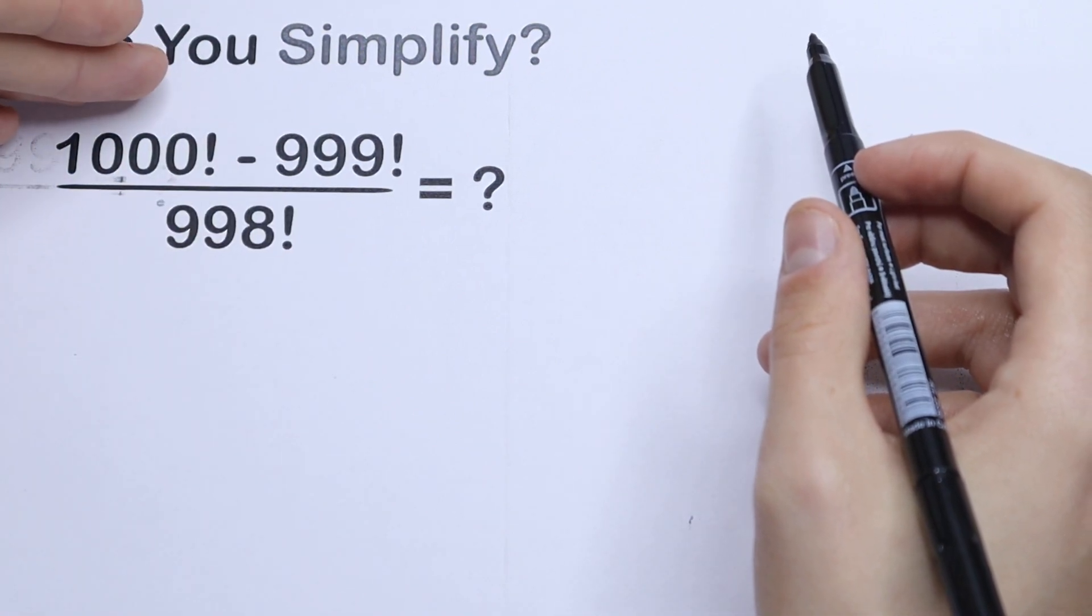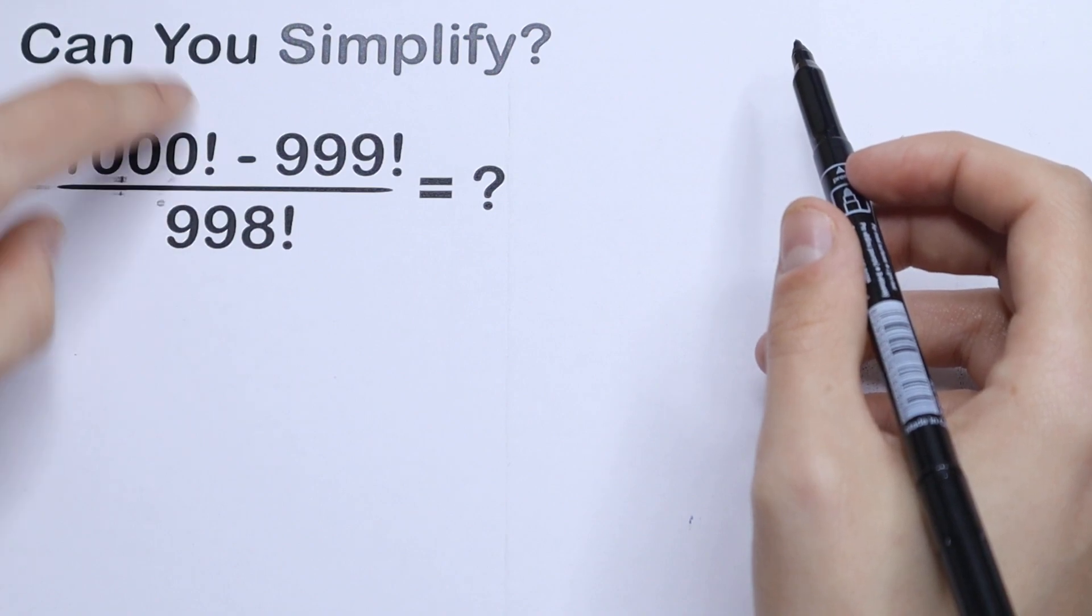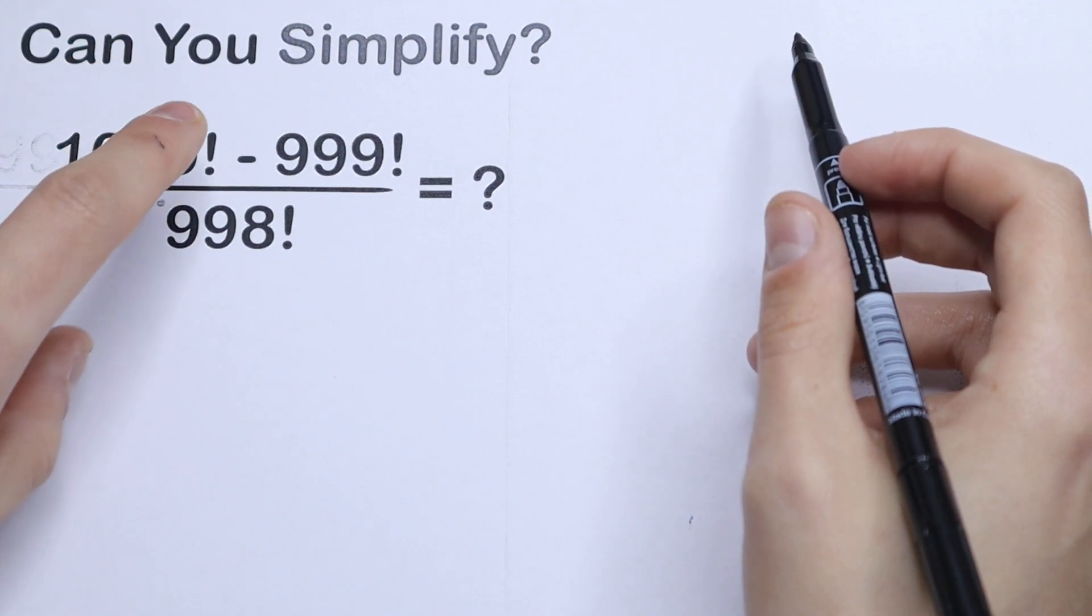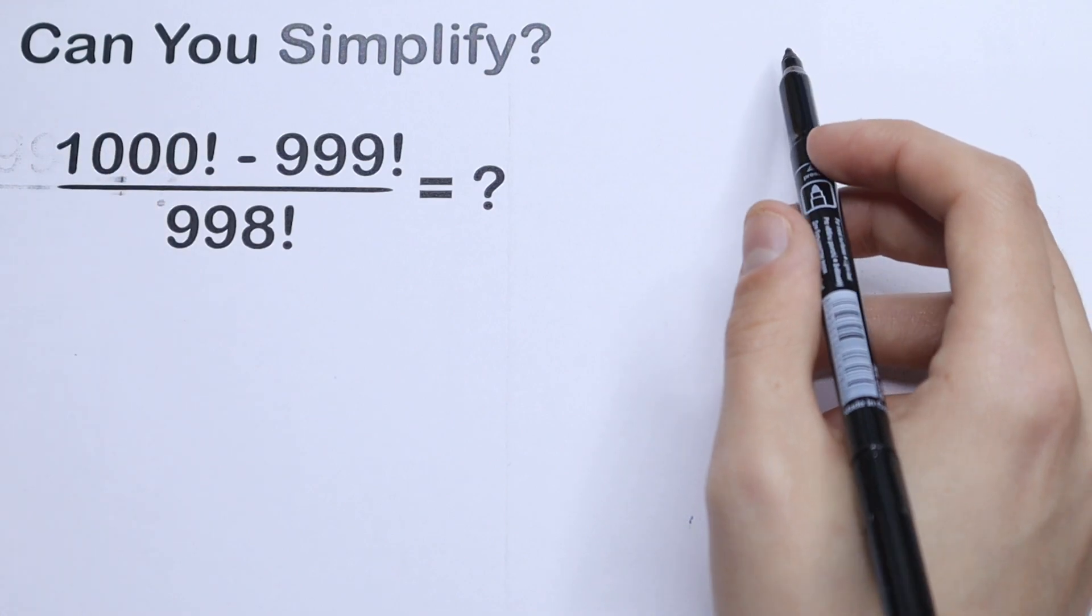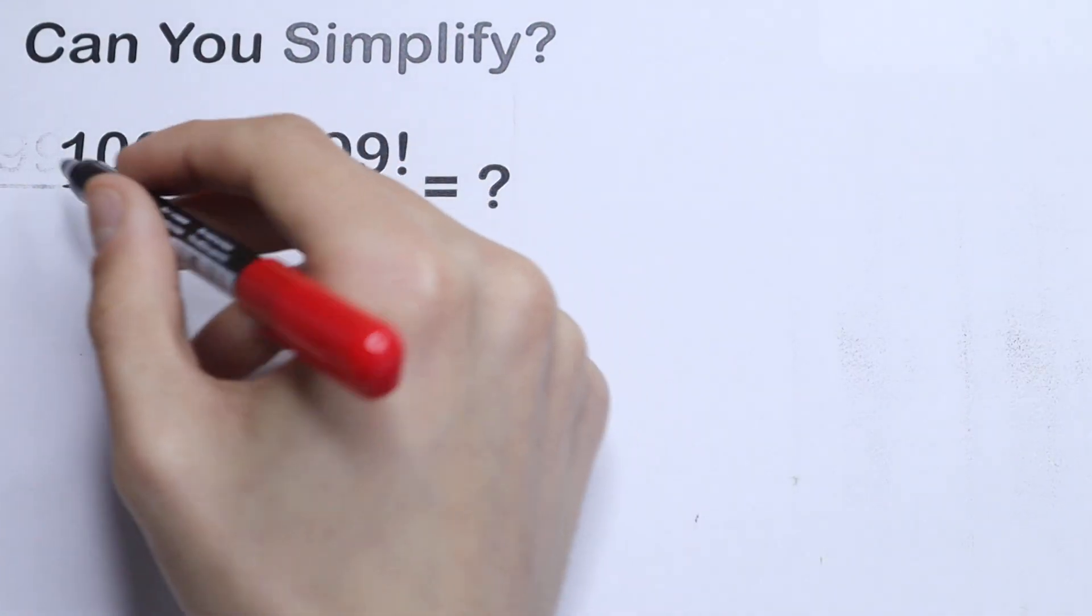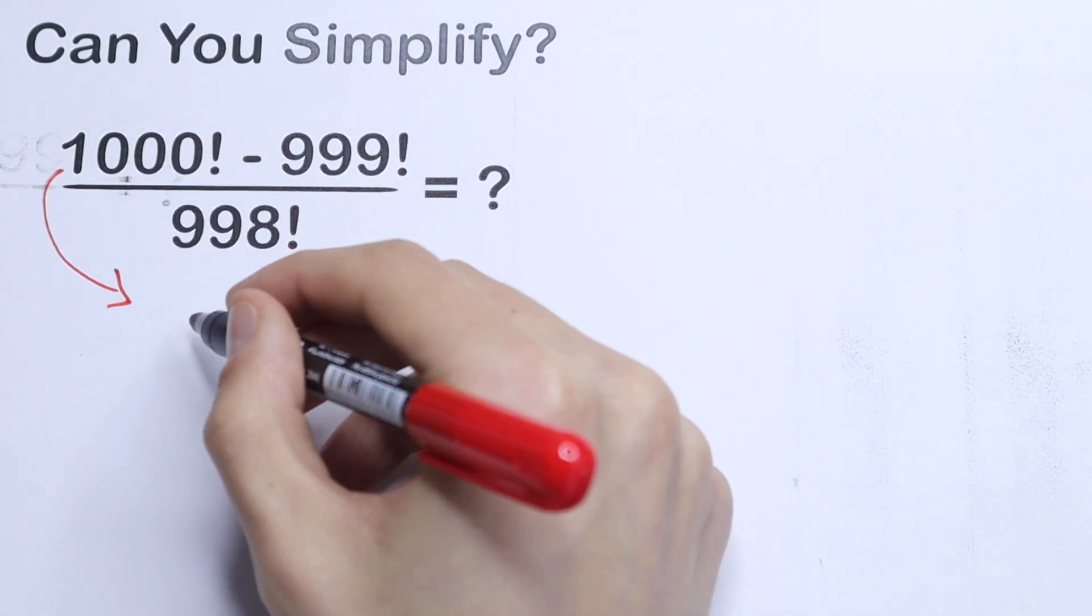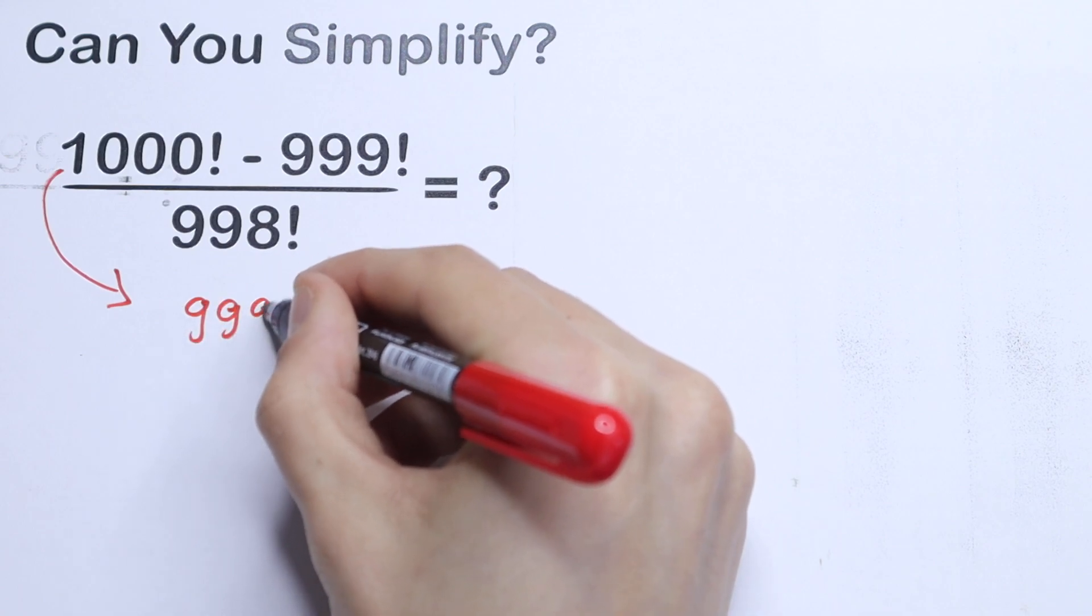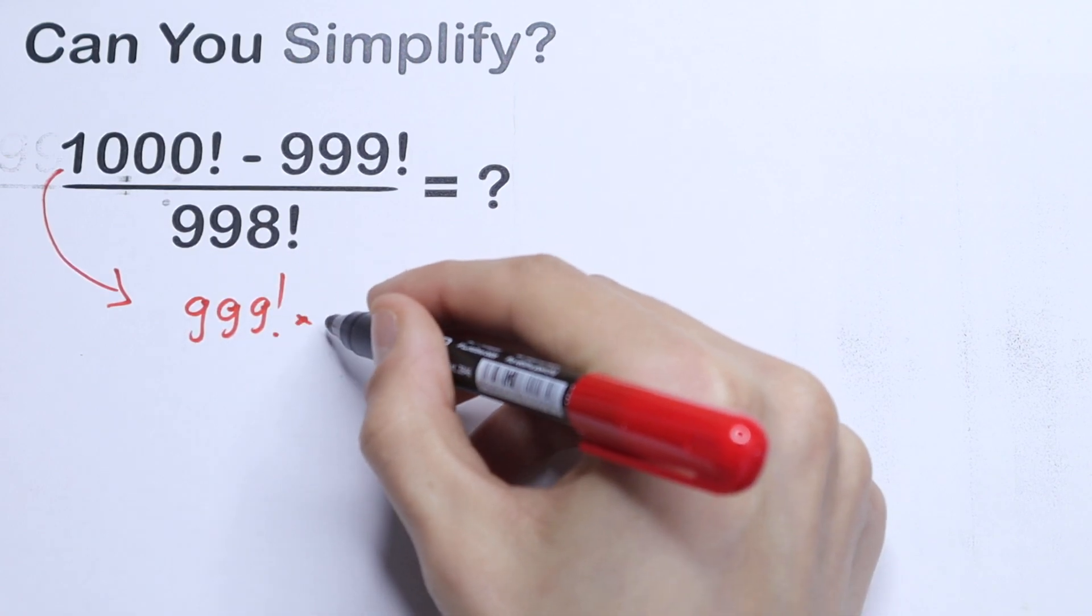Of course this number is really huge and we don't need to find this factorial exactly. So what I recommend is to write this 1000 factorial. Let's write this 1000 factorial as 999 factorial times 1000.